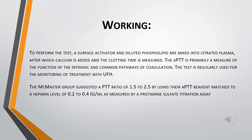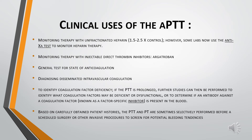APTT is mostly used for monitoring a person being treated with unfractionated heparin. The McMaster group suggested an APTT ratio of 1.5 to 2.5, using their APTT reagent matched to a heparin level of 0.2 to 0.4 international units per ml as measured by protamine sulfate. Achieving this ratio indicates that the anticoagulant is working properly.